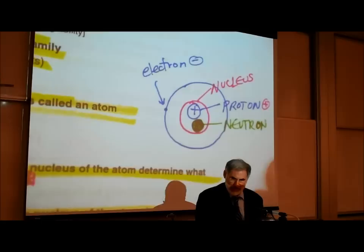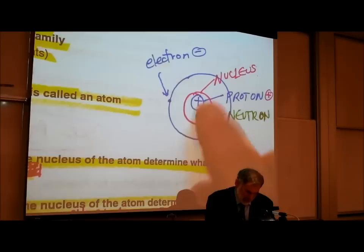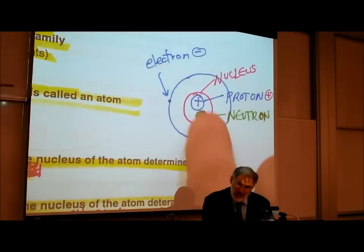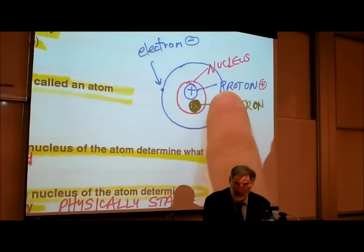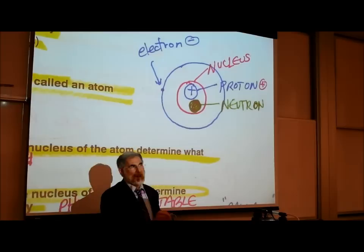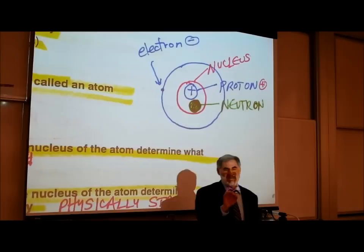I drew a very simplified model of an atom. This area in the center is called the nucleus. In the nucleus there can be one or more positively charged particles called protons. It's easy to remember that protons have a positive electrical charge because proton starts with the letter P, and so does the word positive.